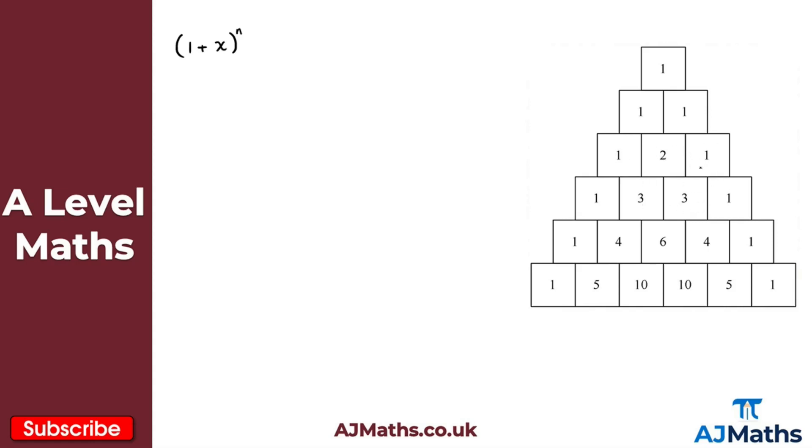Same again here for this three, two plus one give me that three. As we go down, one plus three gives me four, three plus three gives me six, three plus one gives me four, and again we've got these ones on the side. We keep going down here: one plus four gives me five, four plus six gives me ten, six plus four gives me ten, four plus one gives me five, and we can keep going like that.